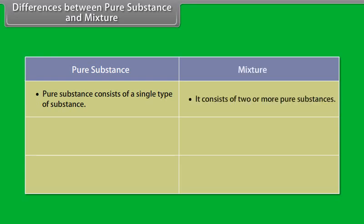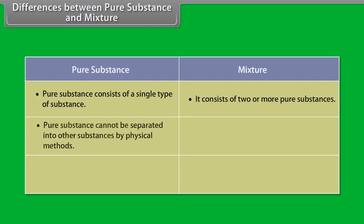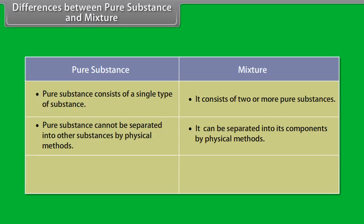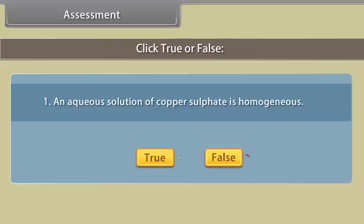Differences between pure substances and mixtures. A pure substance consists of a single type of substance, whereas a mixture consists of two or more pure substances. A pure substance cannot be separated into other substances by physical methods, but mixtures can be separated into their components by physical methods. A pure substance has its own definite properties, while a mixture shows the properties of its components.